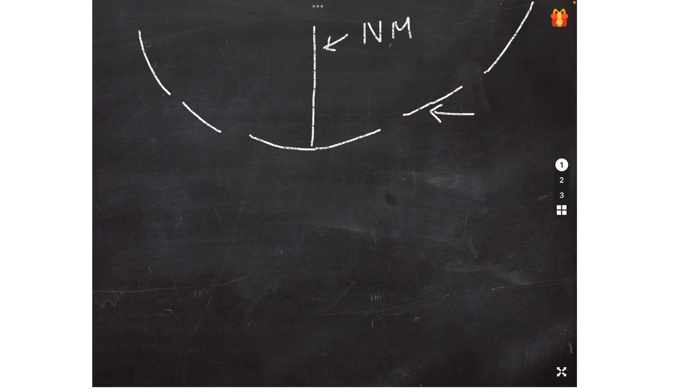So we start by drawing the neural membrane, then we draw the pre-synaptic membrane. Please leave gaps in between, two gaps on each side. So this here is the neural membrane and this here is the pre-synaptic membrane.